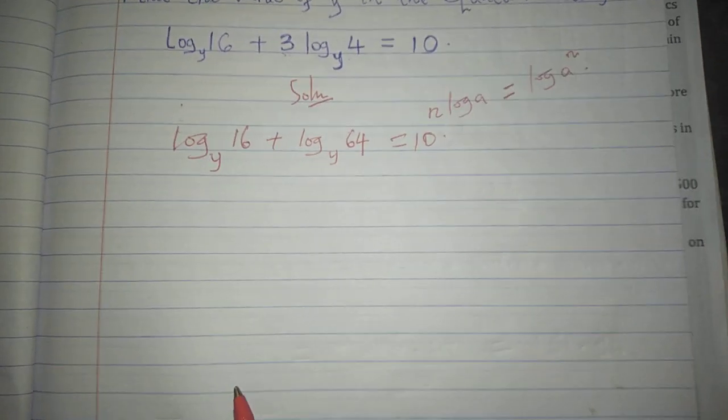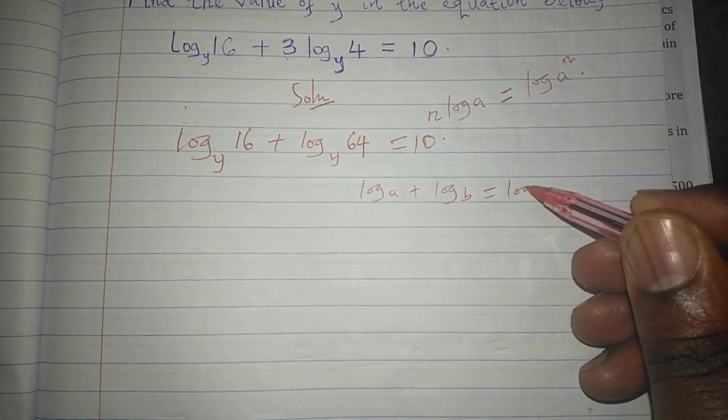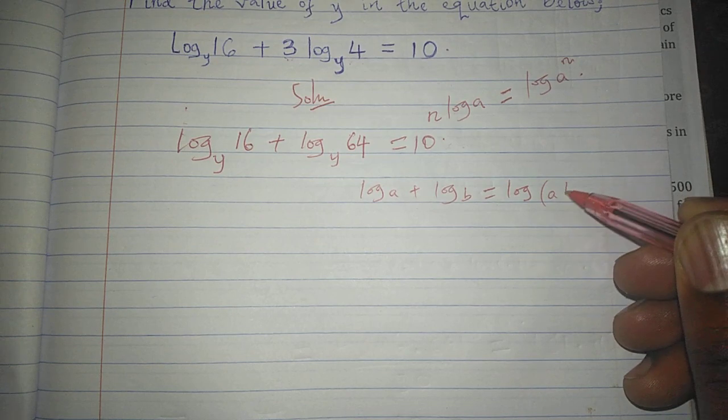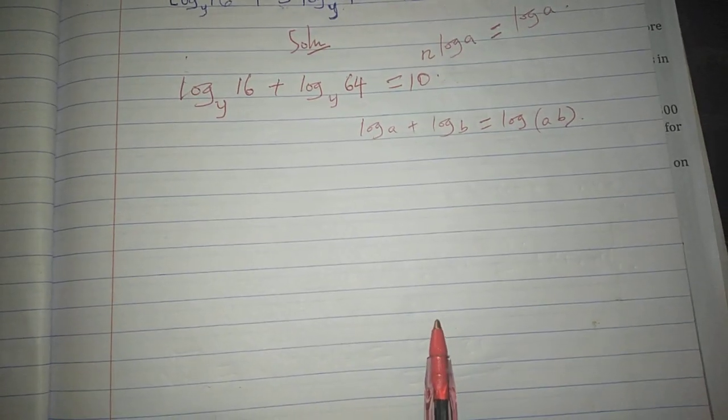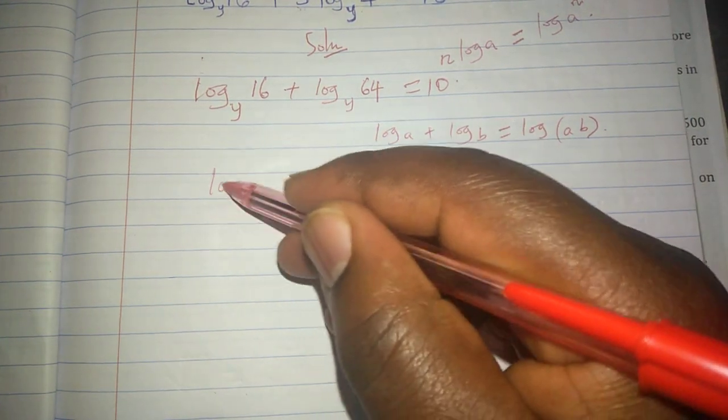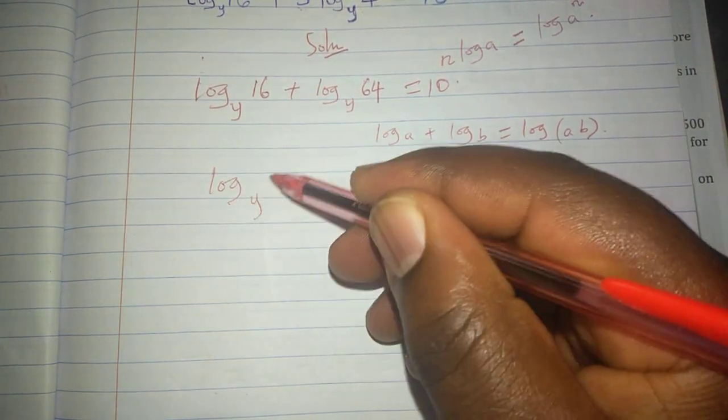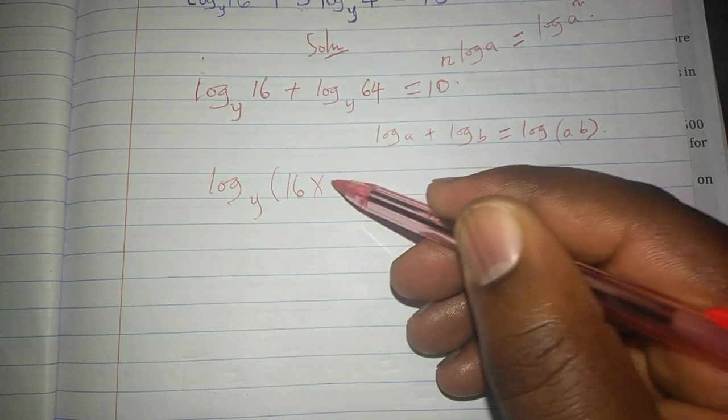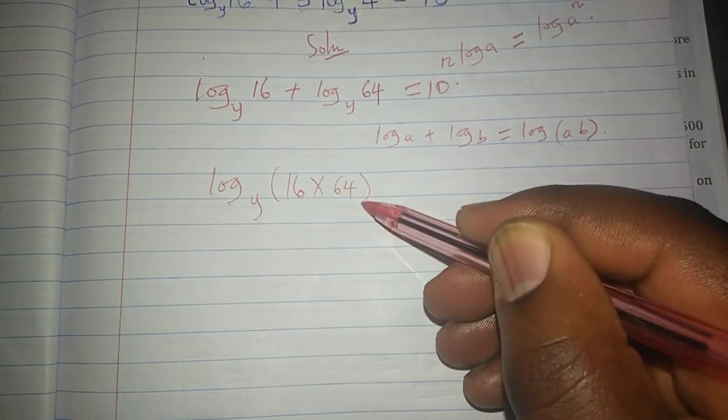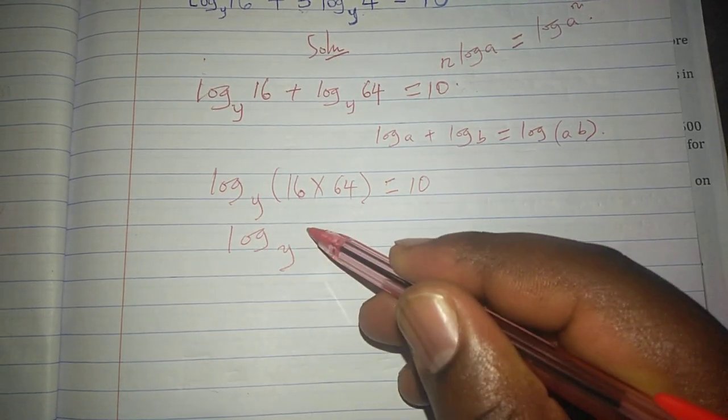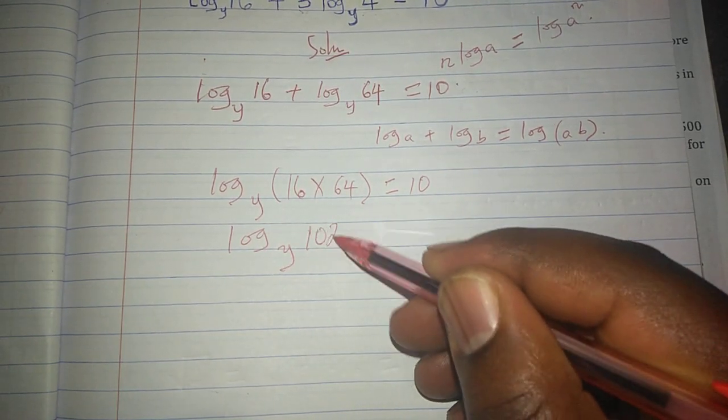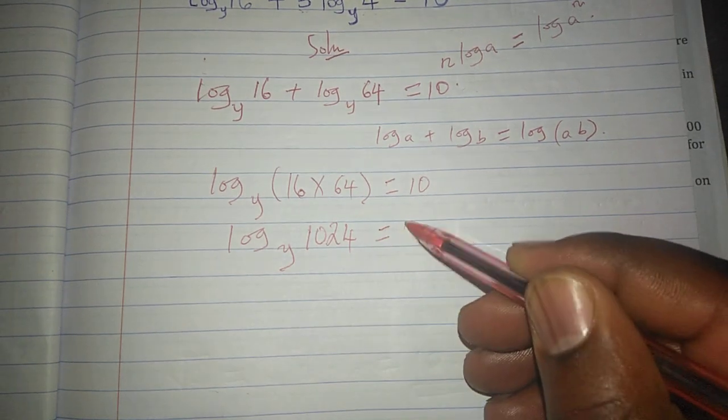Then the next step, we can apply the law of logarithm which says the logarithm of a plus the logarithm of b can be solved by just having the logarithm of a multiplied by b. Because of this plus, we can go to that other stage, which will be the logarithm to base y of 16 multiplied by 64, equals to 10. And this will give us the logarithm to base y of 1024, which is equal to 10.